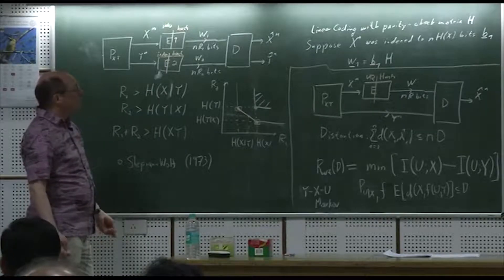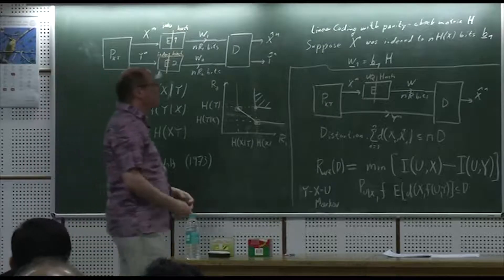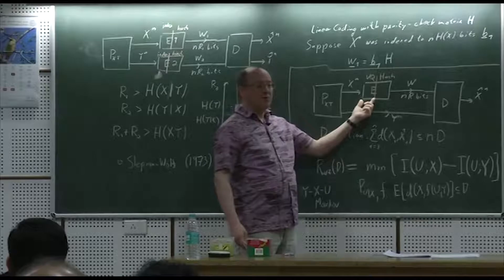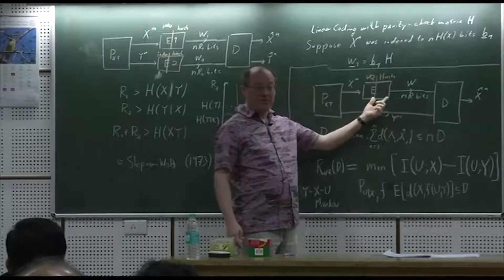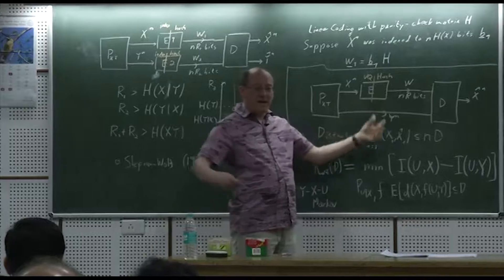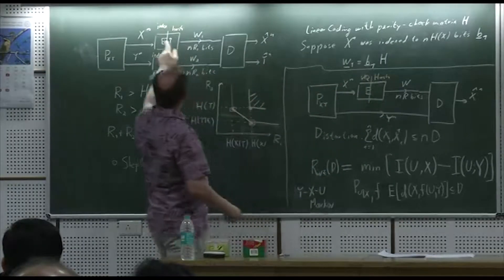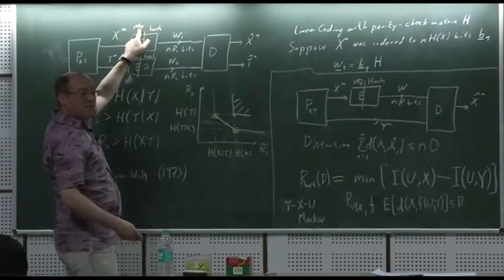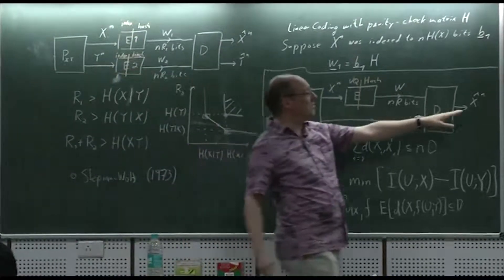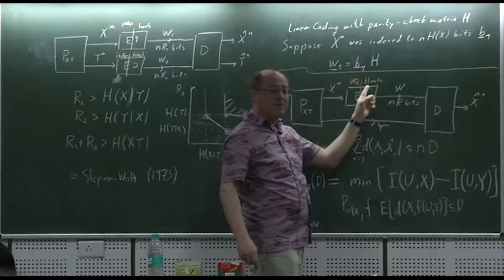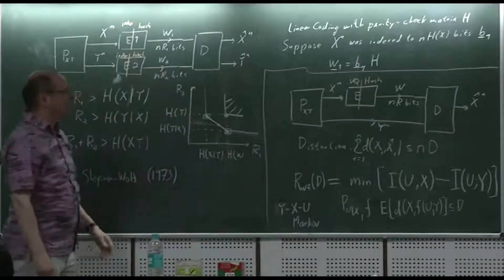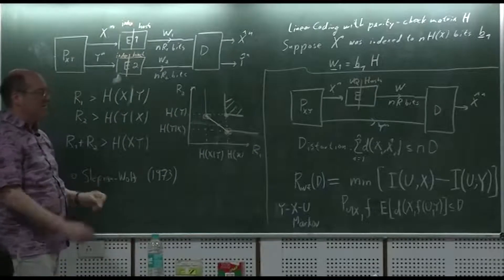The most important insight is the layered encoder architecture: first vector quantization, then hashing — or equivalently indexing via quantization, then hashing the resulting bit string down. That's the architecture suggested by the Wyner-Ziv result.